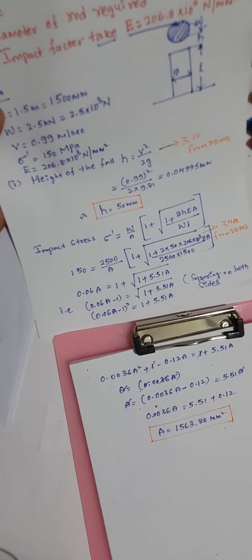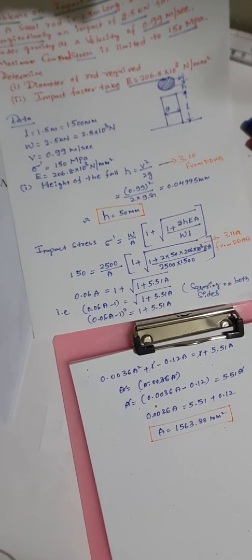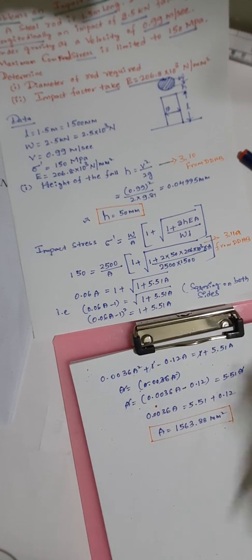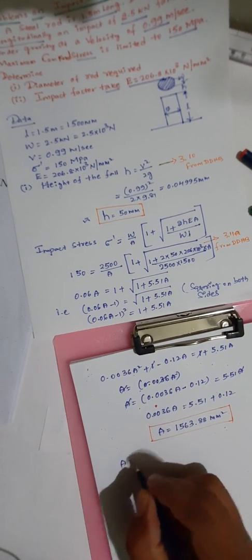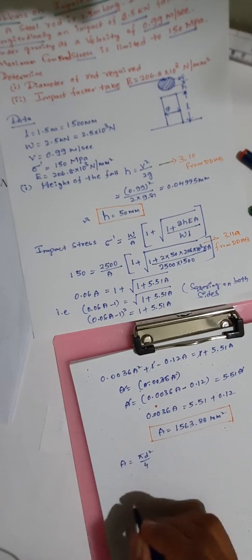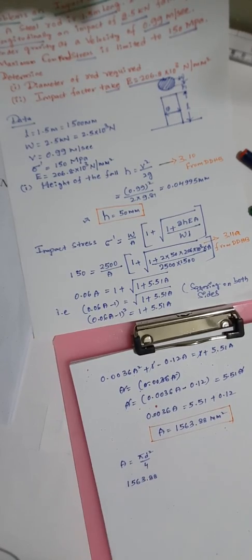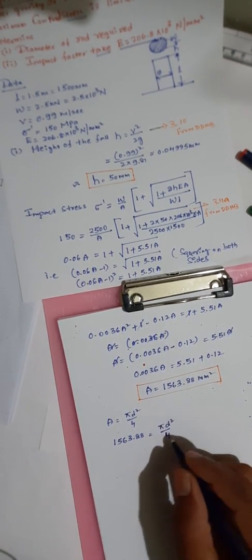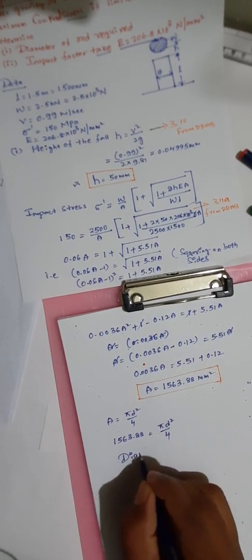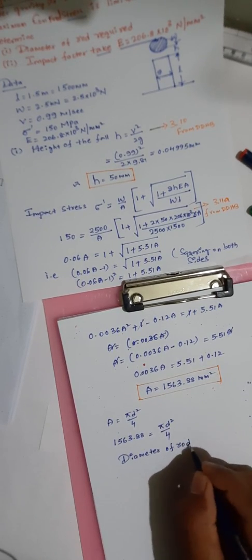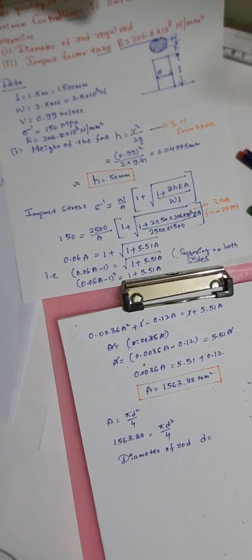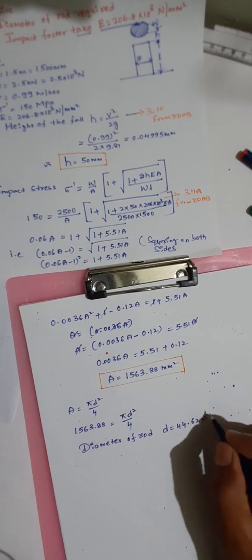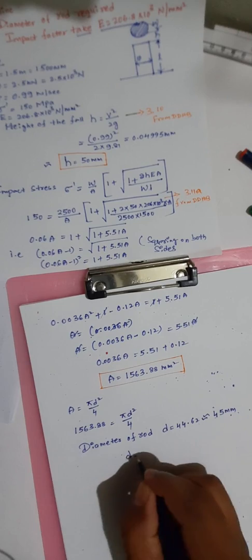From the solution, the area A is equal to approximately 1563.88 mm². Next, we find the diameter using the relation A equals π d² divided by 4. Substituting: 1563.88 equals π d² over 4. Solving for d, the diameter of the rod is d equal to 44.62 mm, which is approximately 45 mm.